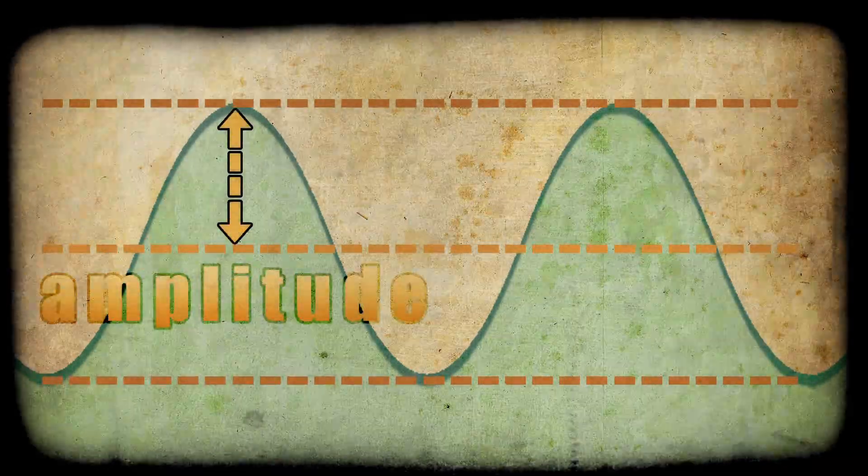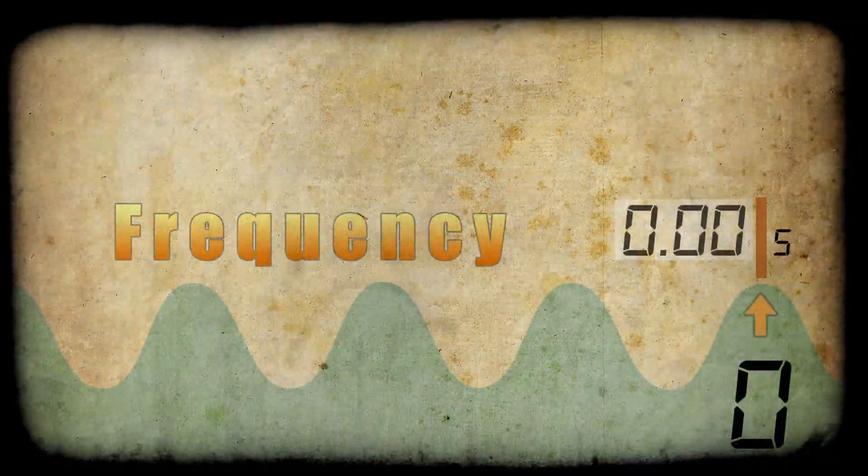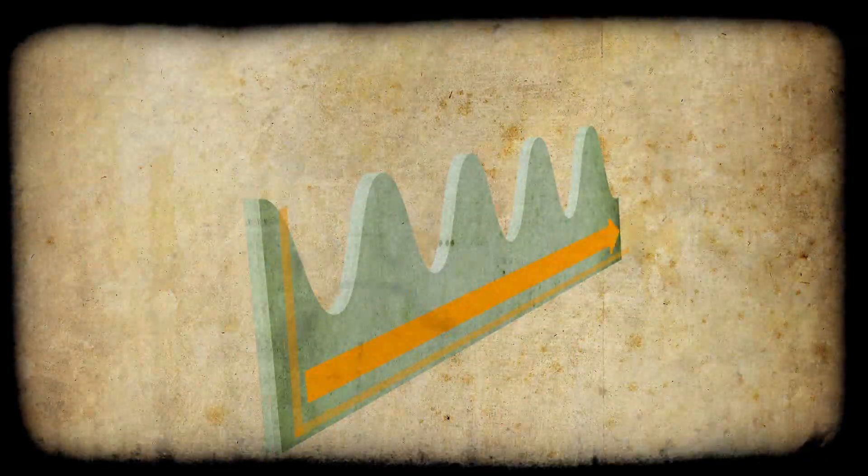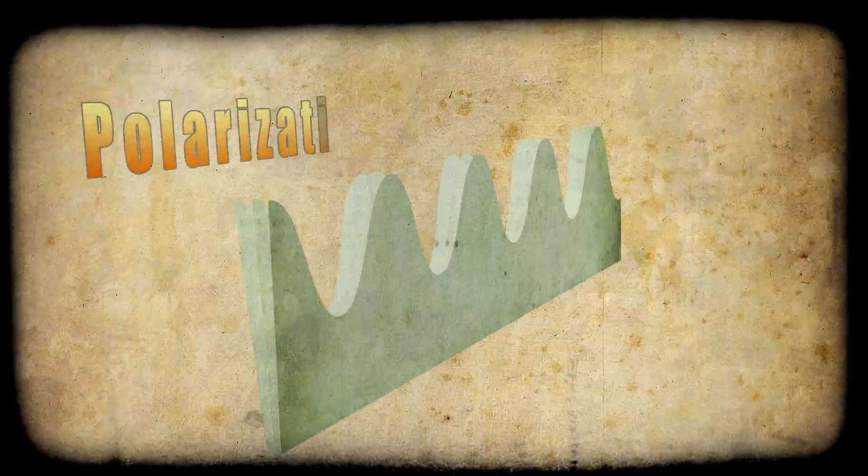Amplitude, which is the height of the wave. Frequency, which is how many times the wave repeats in one second. And finally, polarization, which is the wave's plane orientation.